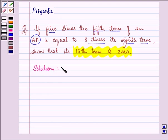Let us first write down the 5th term of an AP. Let the 5th term of an AP, that is the arithmetic progression, be equal to A5, that is equal to A plus 4D,